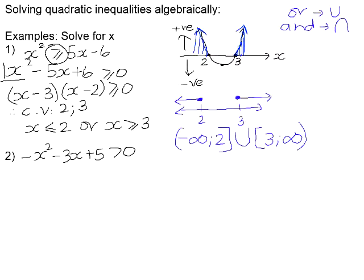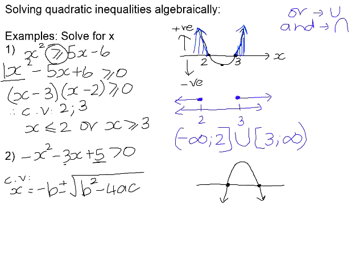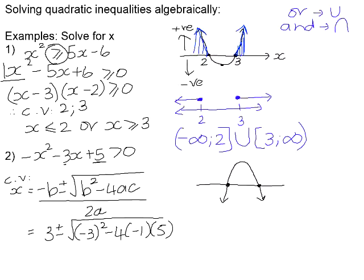Question 2. This is already in standard form: negative x squared minus 3x plus 5 is greater than 0. We know this will be a frowning parabola because the coefficient of x squared is negative. Since 5 is a prime number, its factors will never add up to 3, so we need the quadratic formula: x equals negative b plus or minus the square root of b squared minus 4ac, all over 2a. Substituting, we get x equals negative 4.2 or x equals positive 1.2.